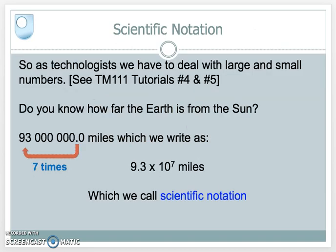We saw in TM111 that we can have a large number with lots of zeros in it, and we can represent this in a more compact way by moving the decimal point. In this case it's to the left because we're looking at 93 million, the distance from the Earth to the Sun. By moving that decimal point 1, 2, 3, 4, 5, 6, 7 times, it will appear between the 9 and the 3.